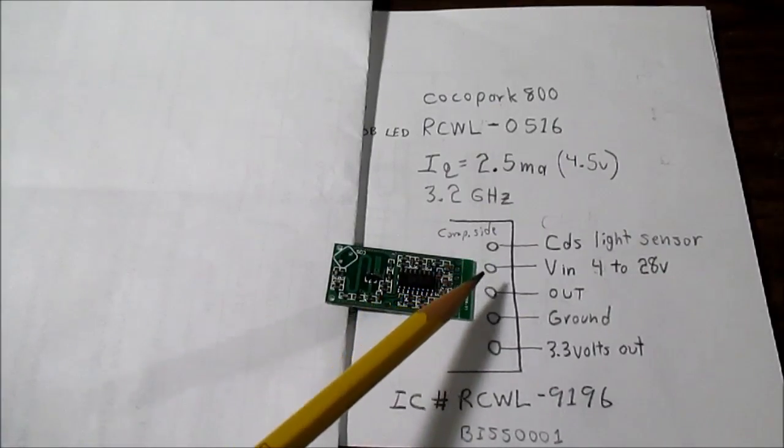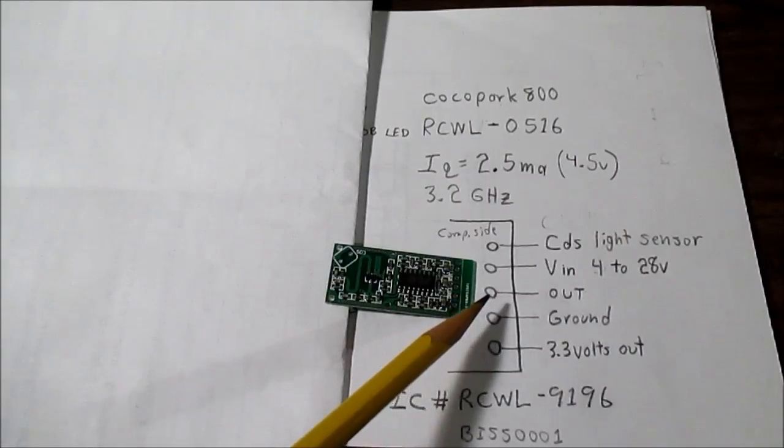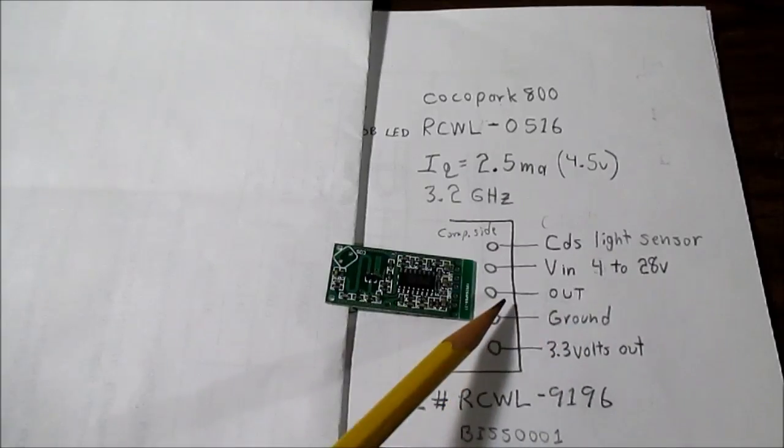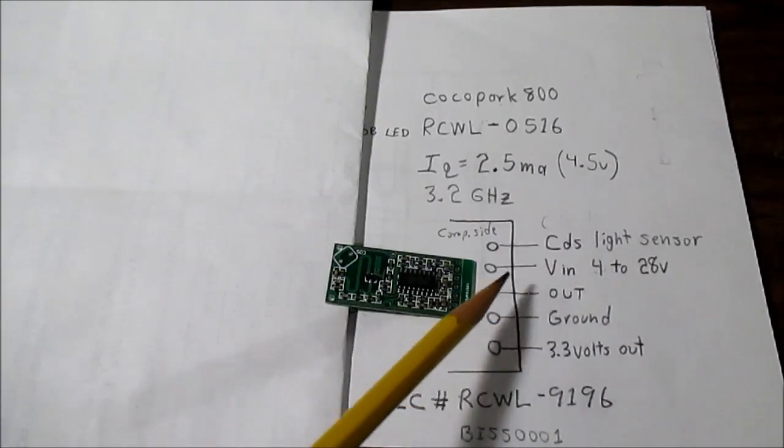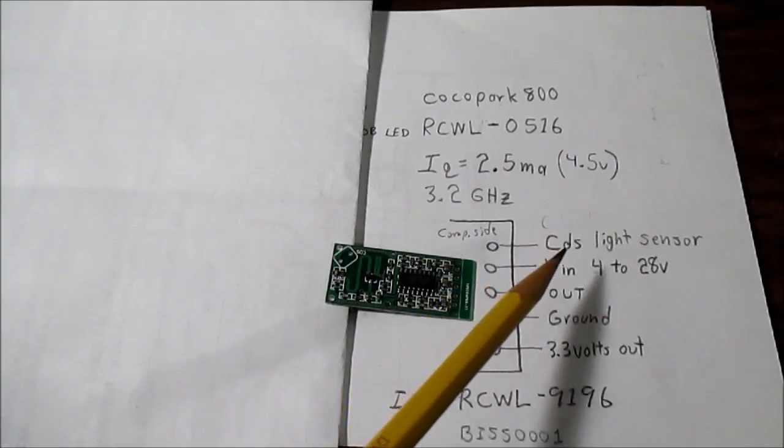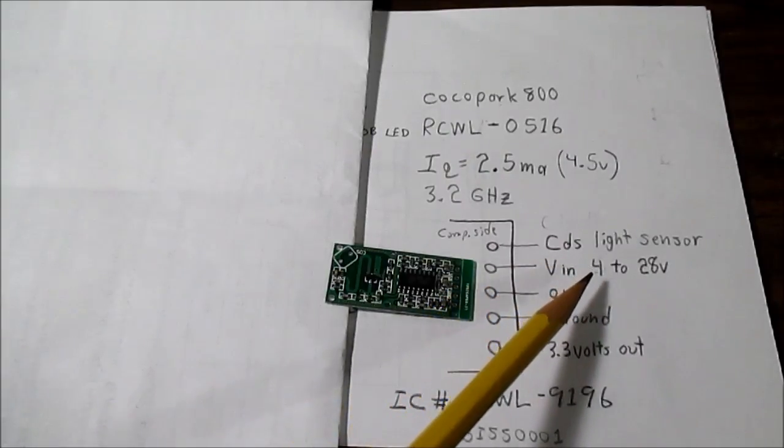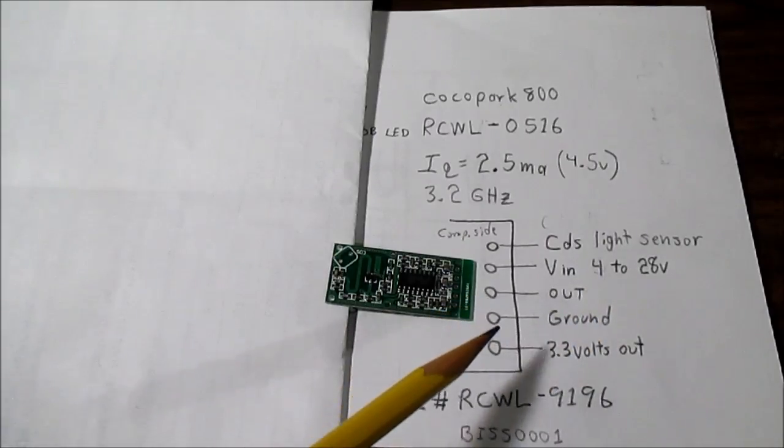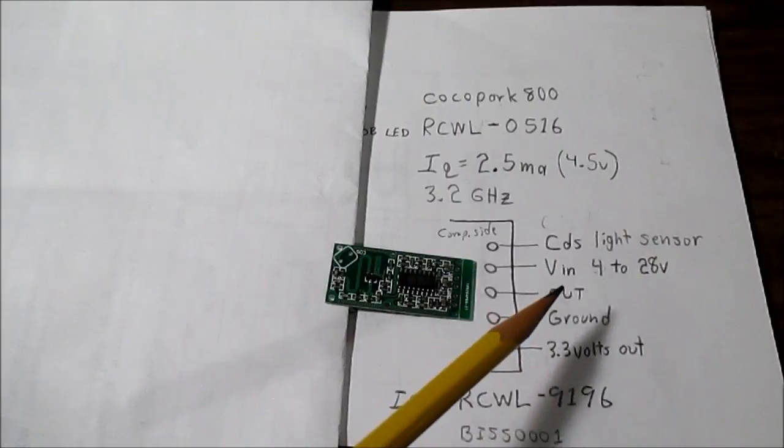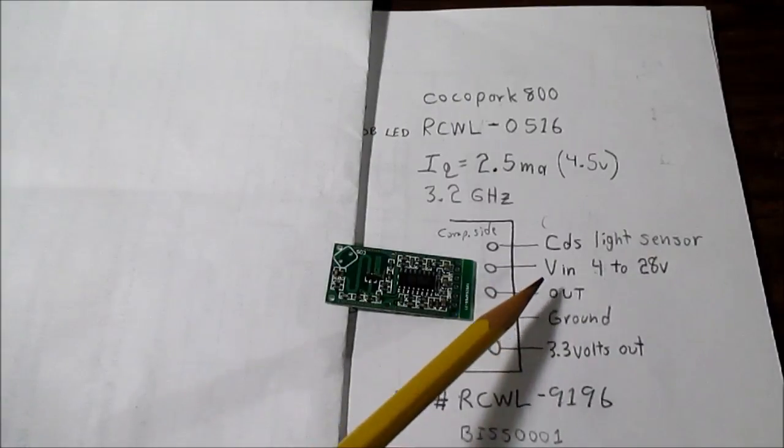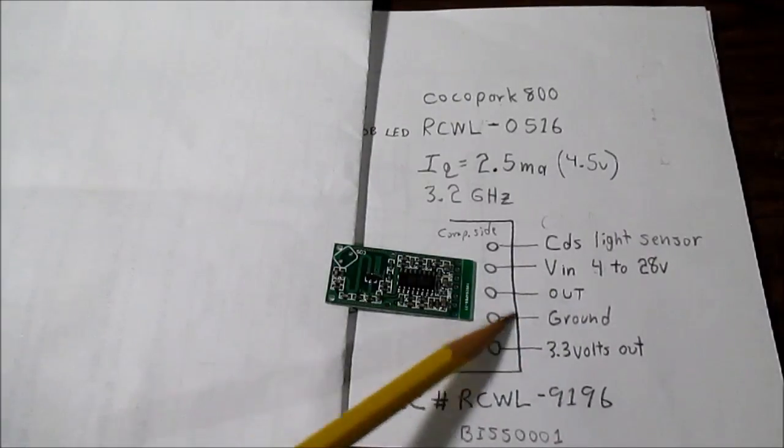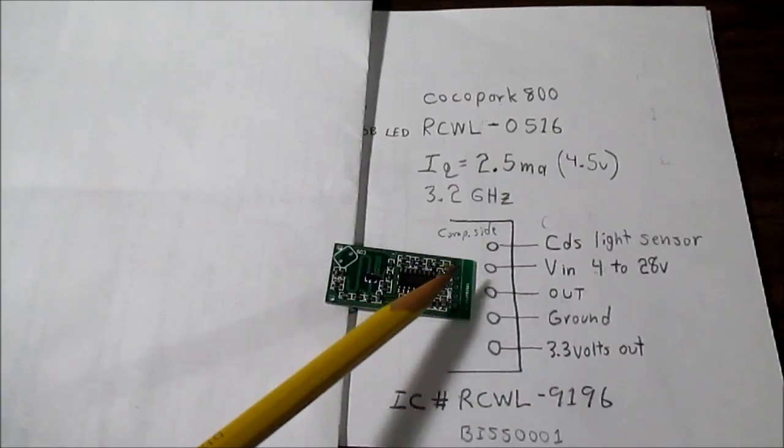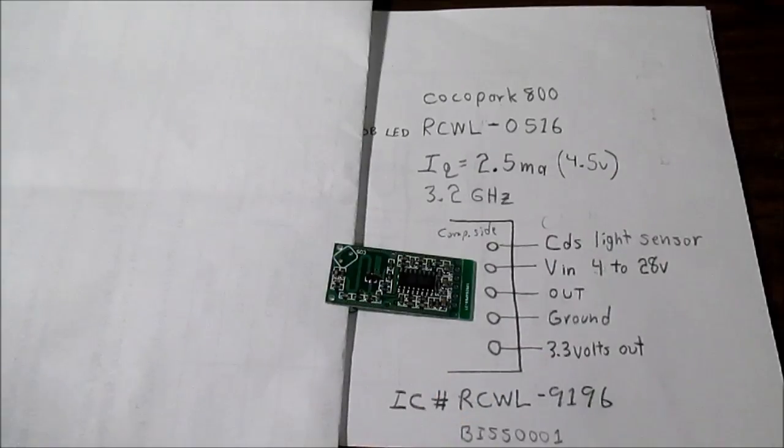So really the only pins to worry about are the three center pins. This is just ground, this is the output, and this is the supply voltage. You can supply it with from 4 to 28 volts. So it doesn't require any regulated voltage or anything for the supply voltage. So now that I know what's going on here with the pins, I'll solder on some wires and hook up an LED and we'll go from there.